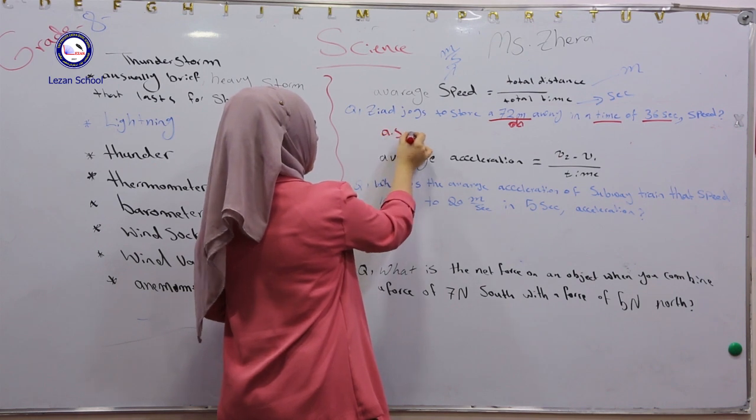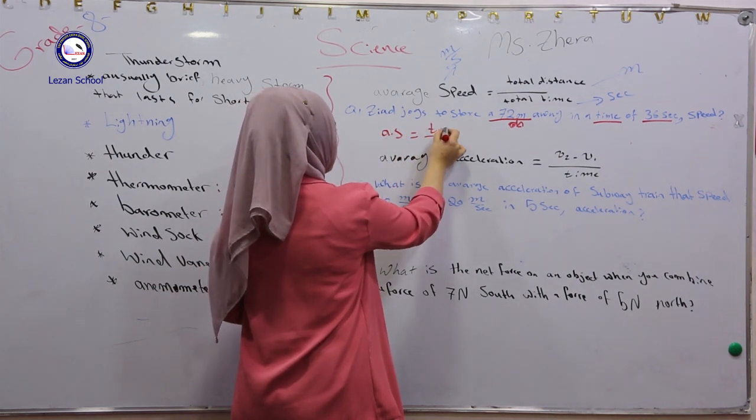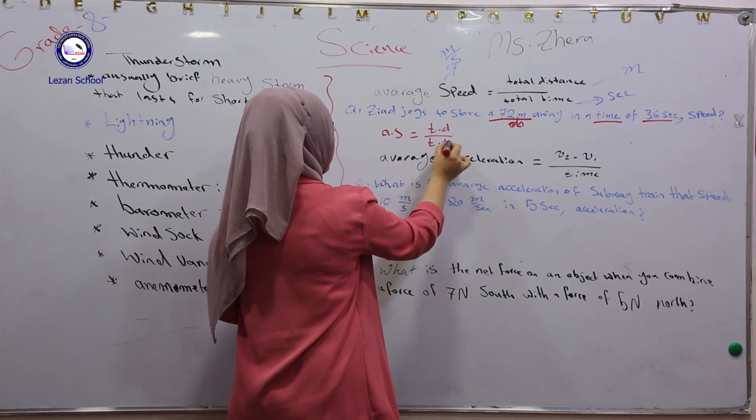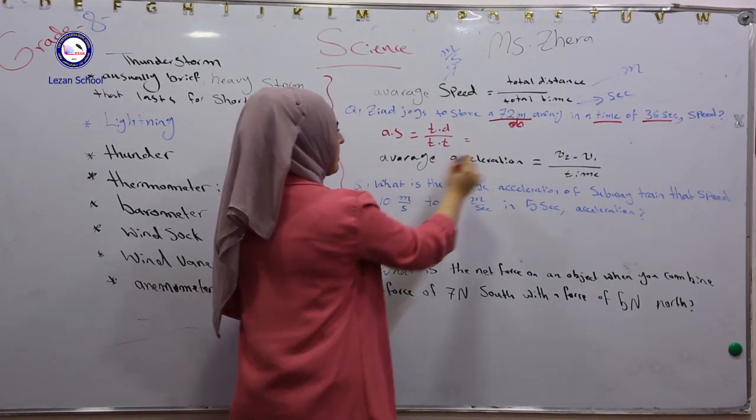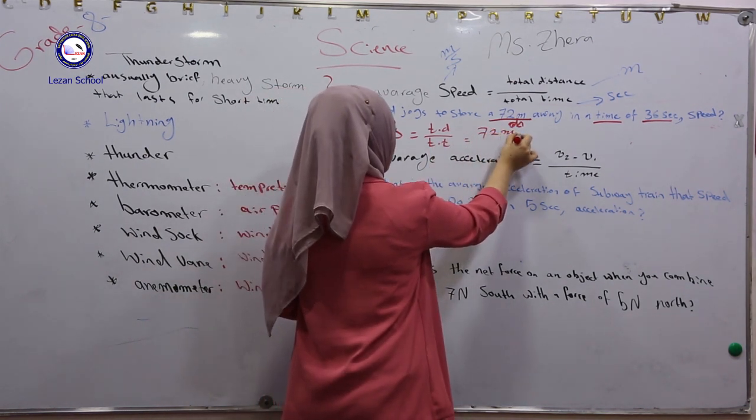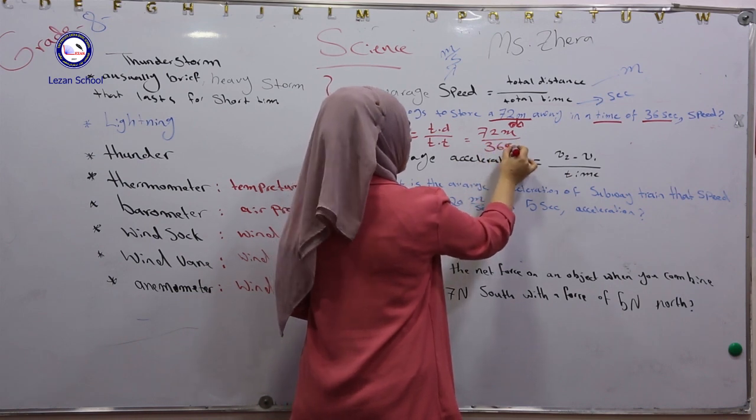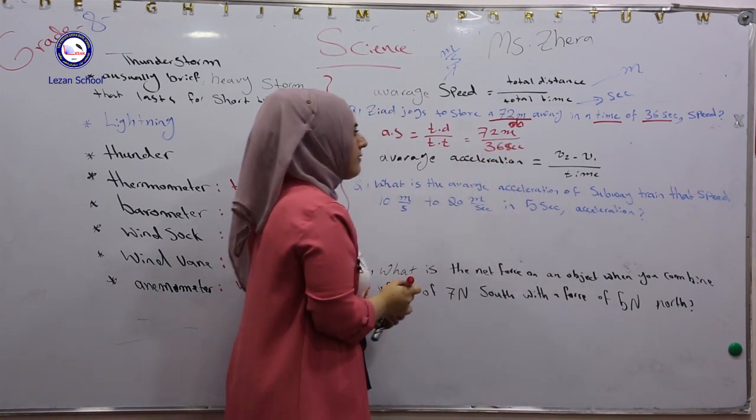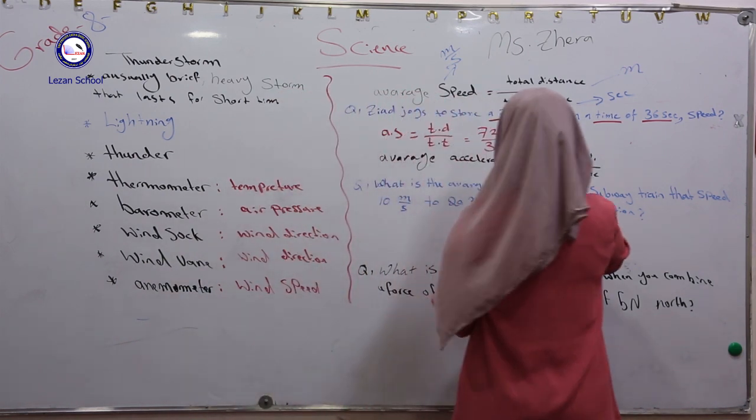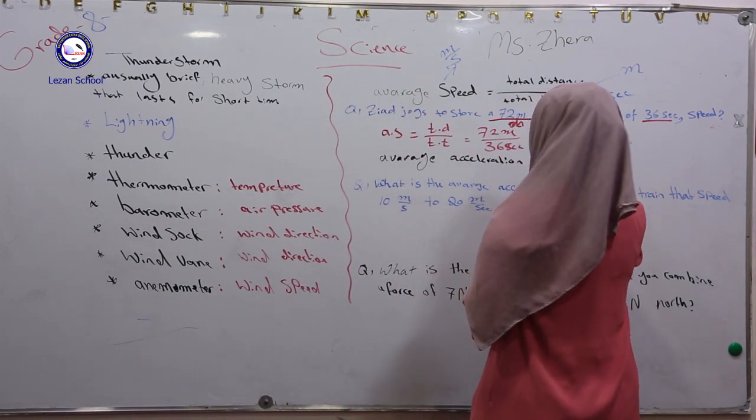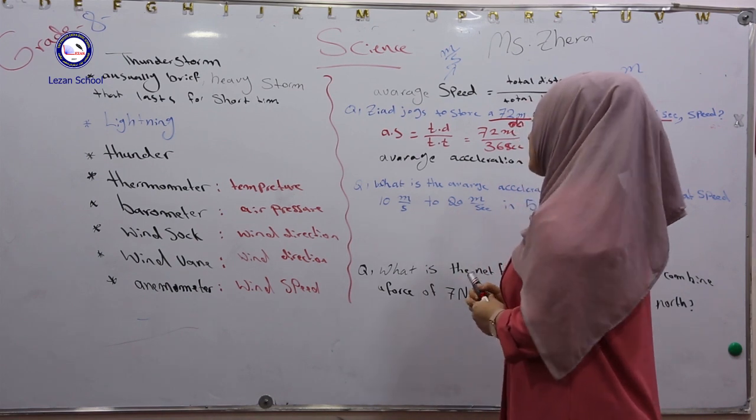Average speed: you write down average speed equals total distance over total time. So how much total distance? 72 meters. Over how much total time? 36 seconds. In this moment, calculate 72 divided by 36. Find out the result equals 2 meters per second. This is about average speed.